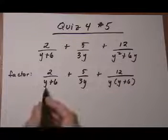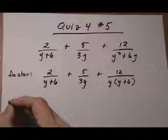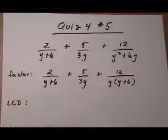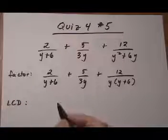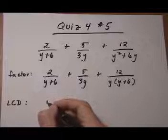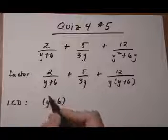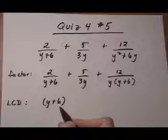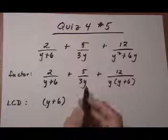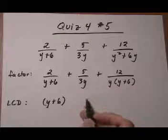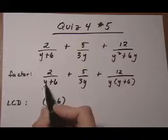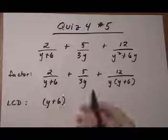Now that we have our factored denominators, we can build our least common denominator, the LCD. Take the first denominator that you see, entirely. Now remember, y plus 6 in its entirety is one factor, and factors are things that are going to be multiplied together. The y and the 6 here are not factors of each other, because they're being added together.